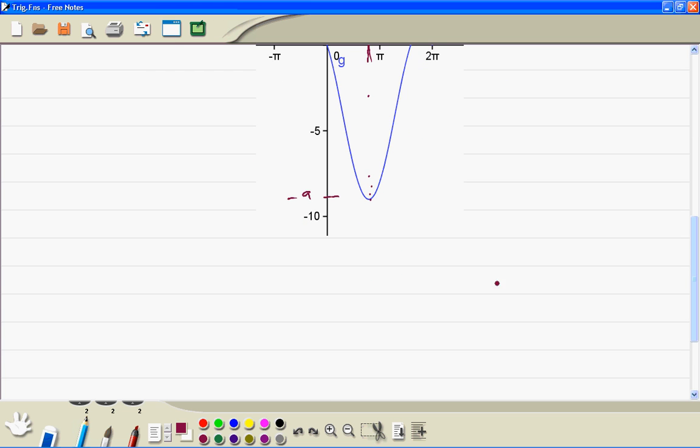So write your answer, here minimum value is minus 9, and it occurs when x is equal to 143 degrees.